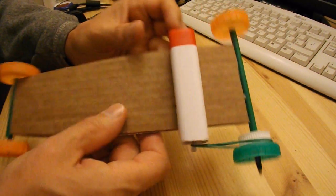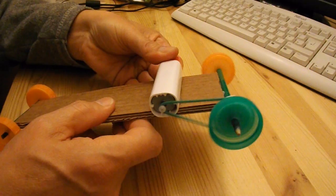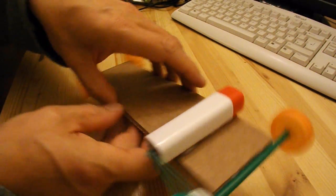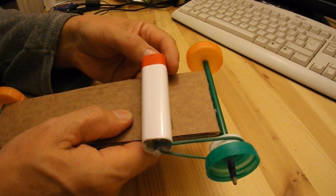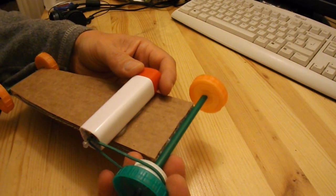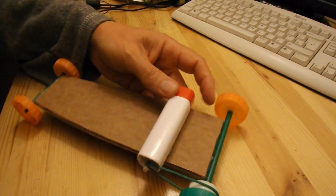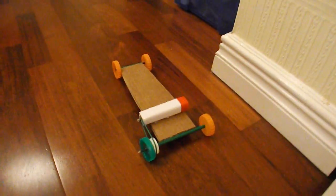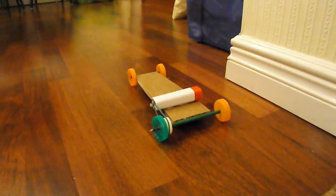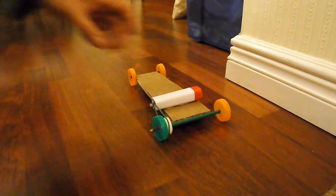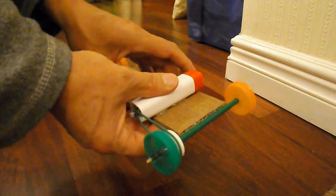But there we are, it's in position. If I switch that on, there you go. A working electric car. Just see if we can put it on the floor somewhere so we can actually see it go. Okay, here we go. Just put the camera down. Switch it on. And there we go. A very simple electric car.